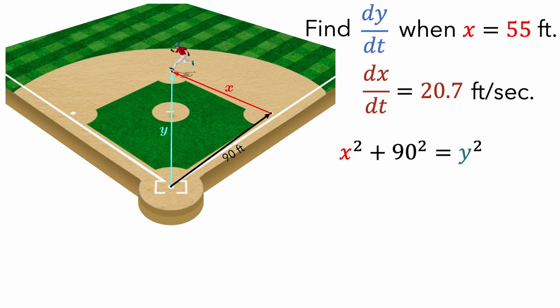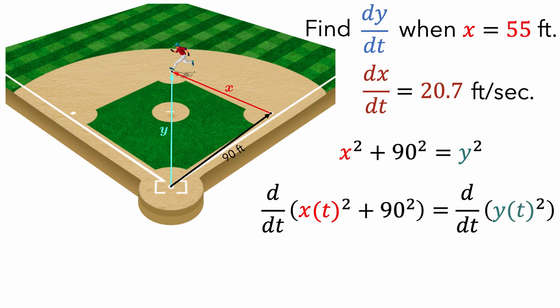We can get a relationship between dy/dt and dx/dt if we differentiate each side of this equation with respect to the elapsed time. To do this, we first need to think of x as a function of t, and also think of y as a function of t. Then, using the chain rule, the derivative of x squared of t is 2x times dx/dt. The derivative of 90 squared is 0, and the derivative of y squared of t is 2y times dy/dt.